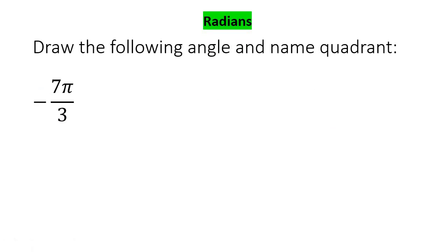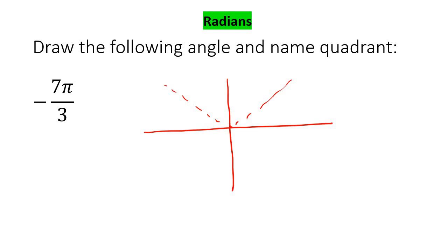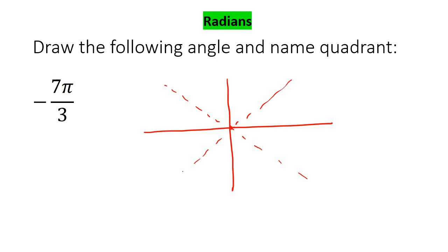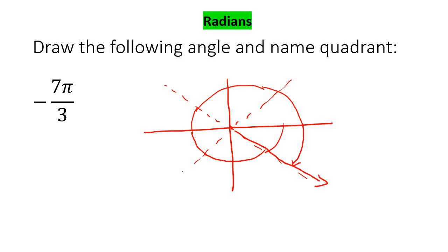Now we're going to break it up into three parts. When you break up into three parts, you're not going to use the x-axis as one of the segment parts, so you go like this and like that. At the top we've got one, two, and three parts. We're going to go negative seven: one, two, three, four, five, six, seven. So we are definitely going to be in quadrant number four.